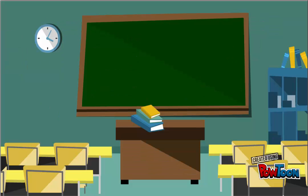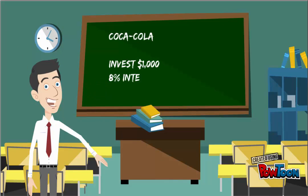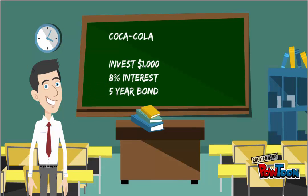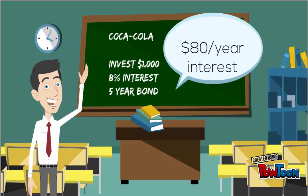If you decided to invest in Coca-Cola, you could invest your $1,000 and you would receive an 8% interest rate for a 5-year bond, which means that you would receive $80 a year in interest and then your $1,000 back at the end of 5 years.